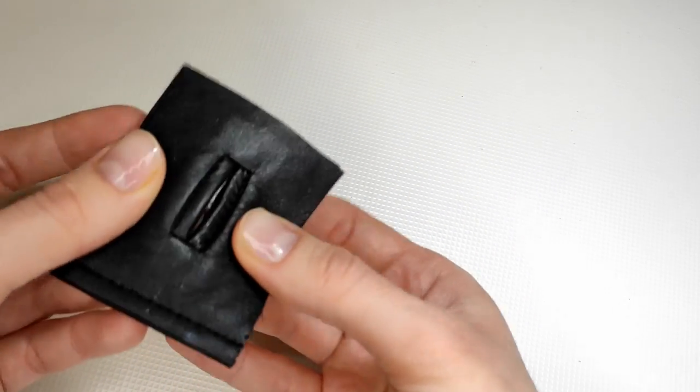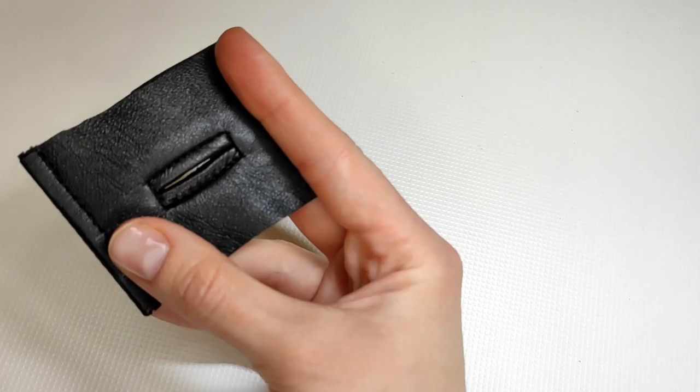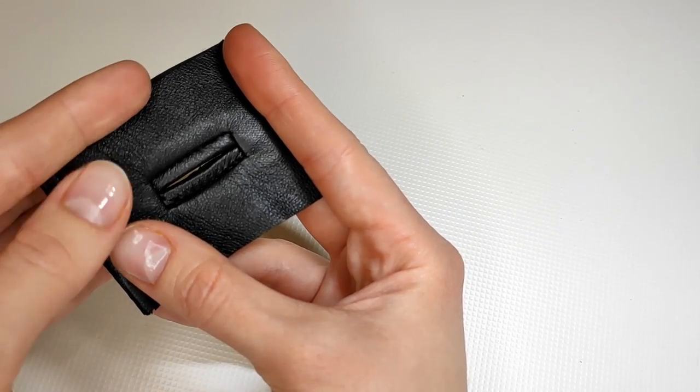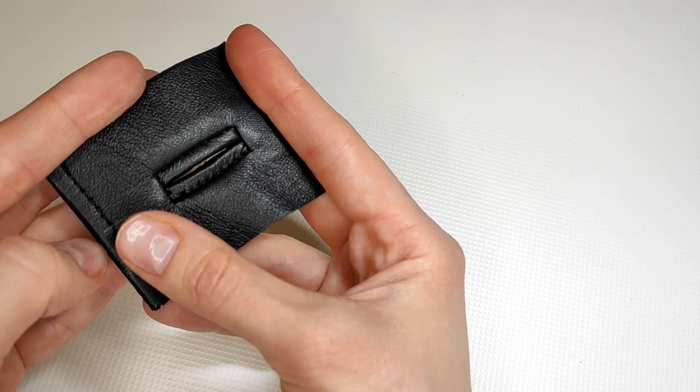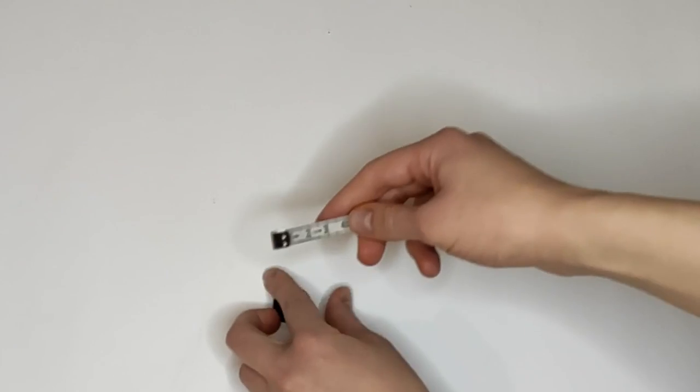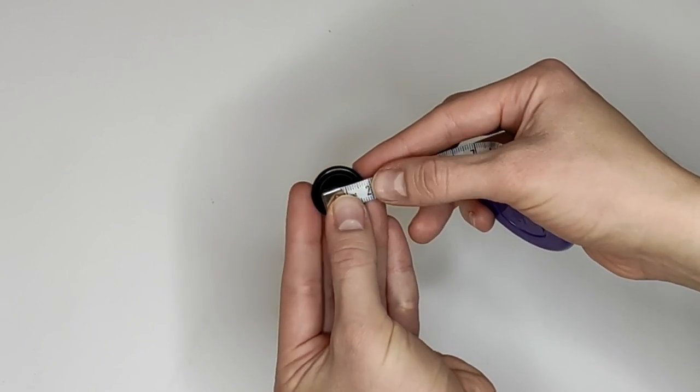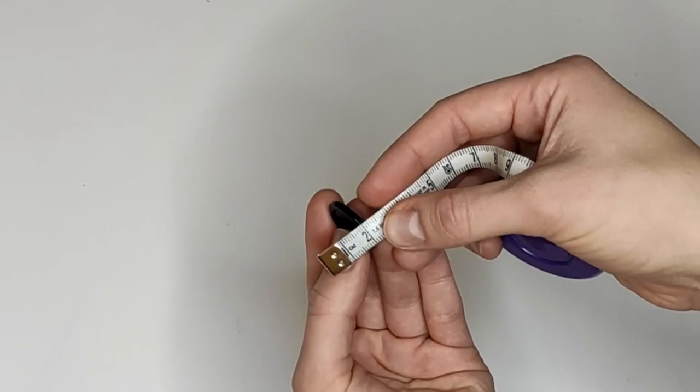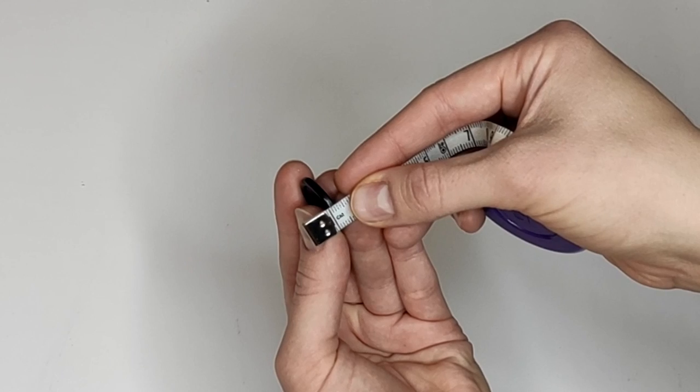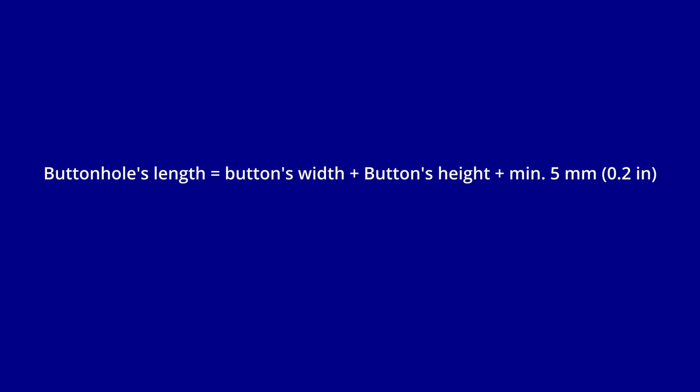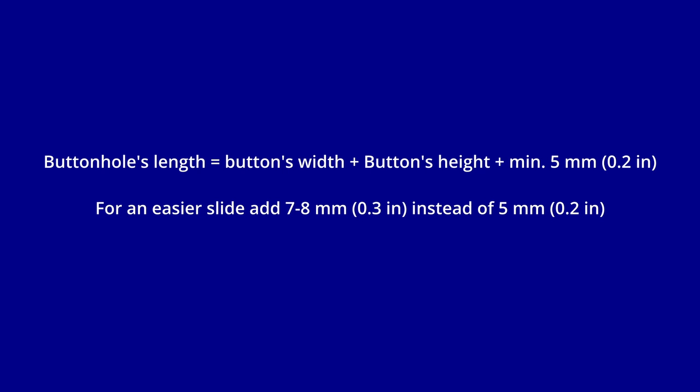Now first we need to decide on the measurements of our final buttonhole. Here is a formula you can use. Buttonhole's length is the button's width plus button's height plus a minimum of 5 millimeters. You can add more, 7-8 millimeters for an easier slide of the button, especially when using leather because it's thicker.